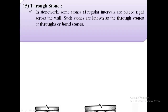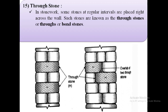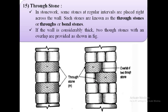The next term is through stones. In stone work, some stones at regular intervals are placed right across the wall. Such stones are known as through stones, throughs, or bond stones. As shown in the image, these are the through stones. If the wall is considerably thick, two through stones with an overlap are provided, as shown in the second figure.